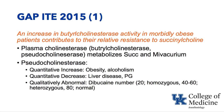Butyrocholinesterase, plasma cholinesterase, and pseudocholinesterase are all referring to the same thing, and they metabolize succinylcholine as well as mivacurium. Pseudocholinesterase can have a quantitative increase, such as in obesity, but also alcoholism can do that. A quantitative decrease can occur if the liver is not making this protein, and it also occurs during pregnancy.